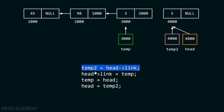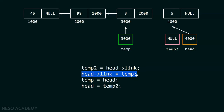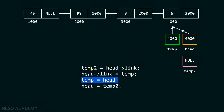We repeat the process once more for the last node. temp2 is updated by head.link, which is null since there's no next node. Then head.link is updated by temp, storing address 3000 in the last node's link. Temp is updated to point to the fourth node, and then head is updated — head now holds null, and the whole linked list is reversed.